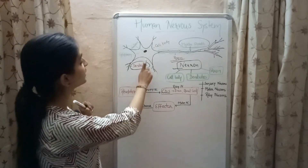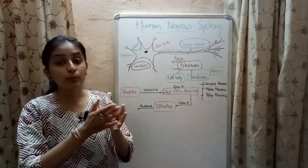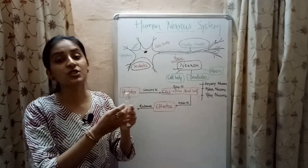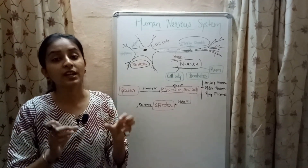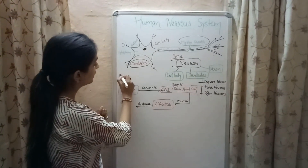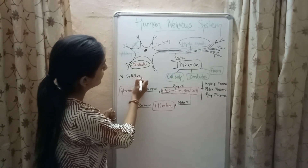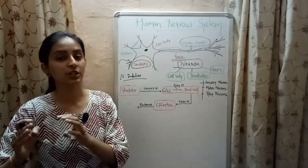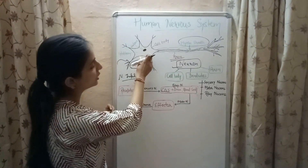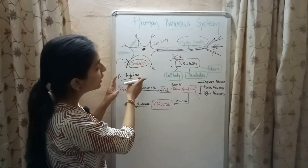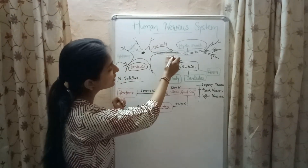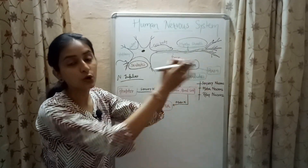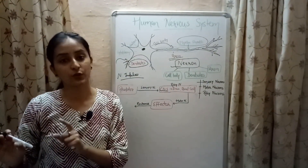What are the functions of the cell body, dendrites, and axon? When your body detects a stimulus — a change in the environment — the energy of the stimulus in the form of nerve impulses is received by the dendrites. The dendrites transfer the nerve impulses to the cell body. From the cell body, the nerve impulses are transferred to the axon, and the axon transfers the nerve impulses to the dendrite of the adjacent neuron.